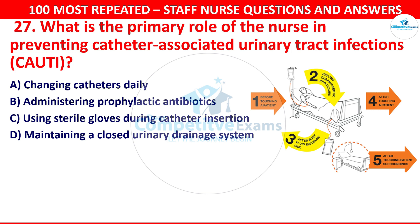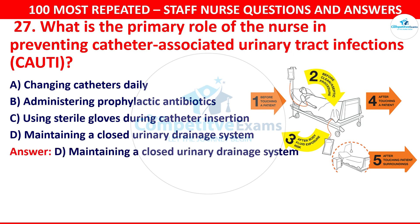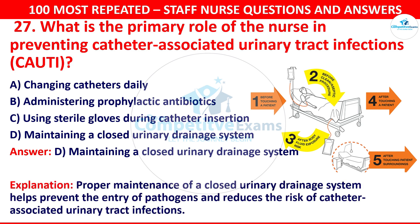The correct answer is maintaining a closed urinary drainage system. The proper maintenance of a closed urinary drainage system helps to prevent the entry of pathogens and reduce the risk of catheter-associated urinary tract infections.